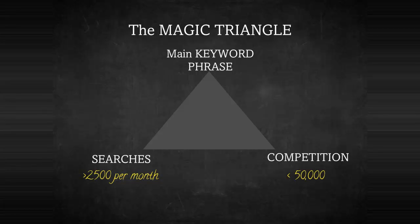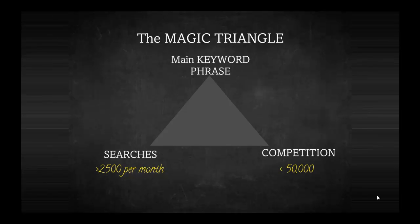The less competition, the better; the more searches, the better — it's about finding the right ratio. If you follow this course closely, you should be able to rank within the top three places on Google where competition is less than 50,000. In the next video, we'll look at exactly how to do your keyword research — the tools you need and how we do it. See you in the next video, thank you.